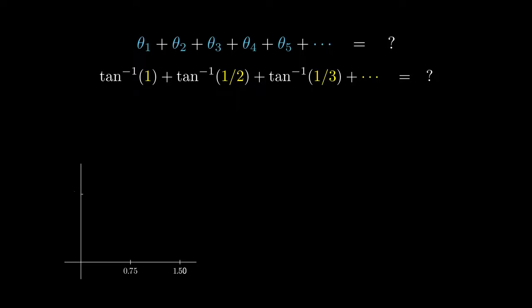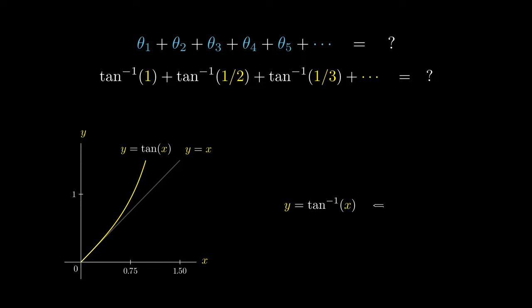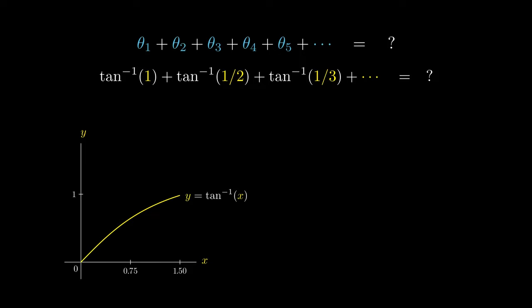Perhaps graphing the function might be helpful for our purposes. Let's first draw the graph of the tangent function. We can also draw the graph of y equals x, because y equals the arctangent of x is equivalent to saying that x equals the tangent of y. Notice that x and y change spots, which means the graph of the arctangent can be obtained by flipping the graph of the tangent over the line y equals x. Now, if we calculate the arctangent of 1, we get 45 degrees, or pi over 4 radians. If we connect the origin with this point using a straight line, this line has y-intercept 0 and gradient pi over 4, giving the equation y equals pi over 4 times x. This means that the arctangent of x is not less than pi over 4 times 1.